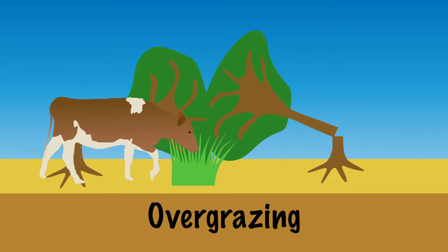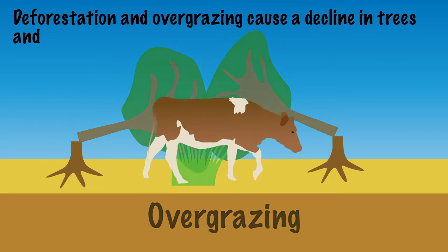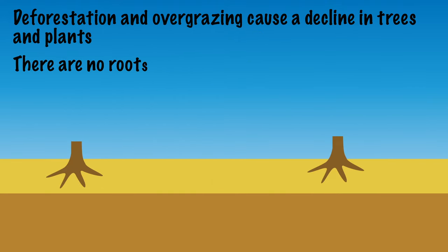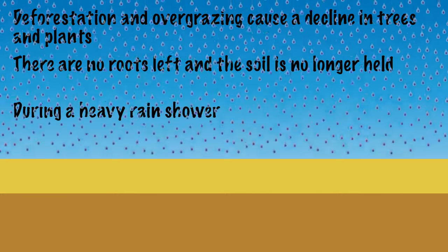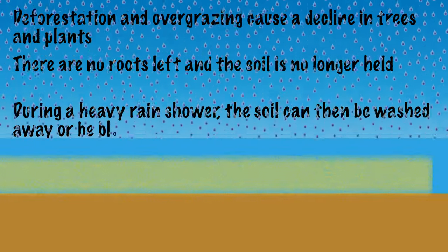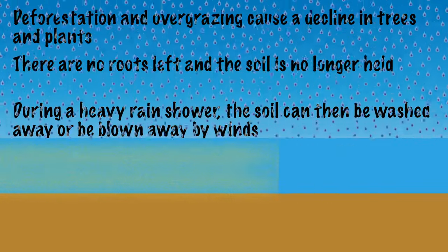Vegetation disappears in the event of deforestation or overgrazing. Normally roots hold the soil, but because there are no roots left, the soil is no longer held. During a heavy rain shower, the soil can then be washed away. This is called soil erosion.